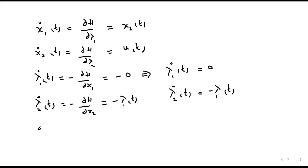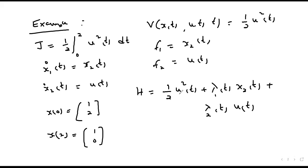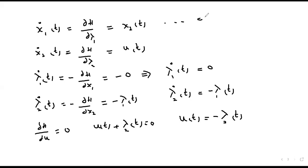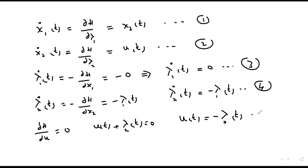Next, the partial derivative of H with respect to u equals zero. Differentiating with respect to u gives u(t) plus lambda-2(t) equals zero, from which u(t) equals negative lambda-2(t). We label these as equations 1 through 5.